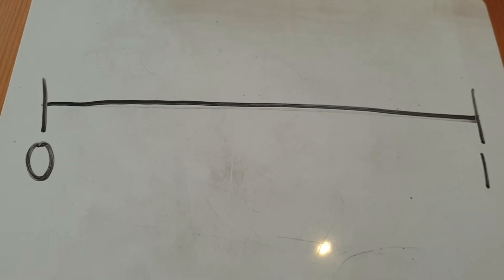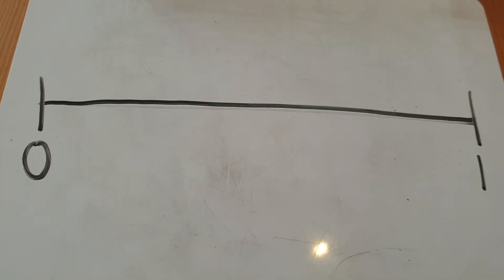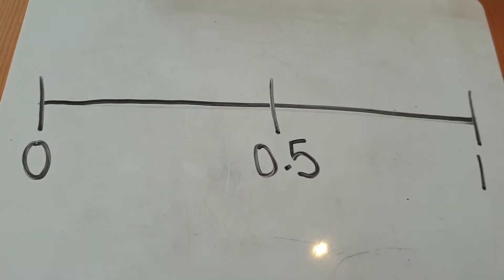For example, here we have a blank number line. If I was to ask a child to find 0.5 on this number line, I would know that would go between 0 and 1 like so.